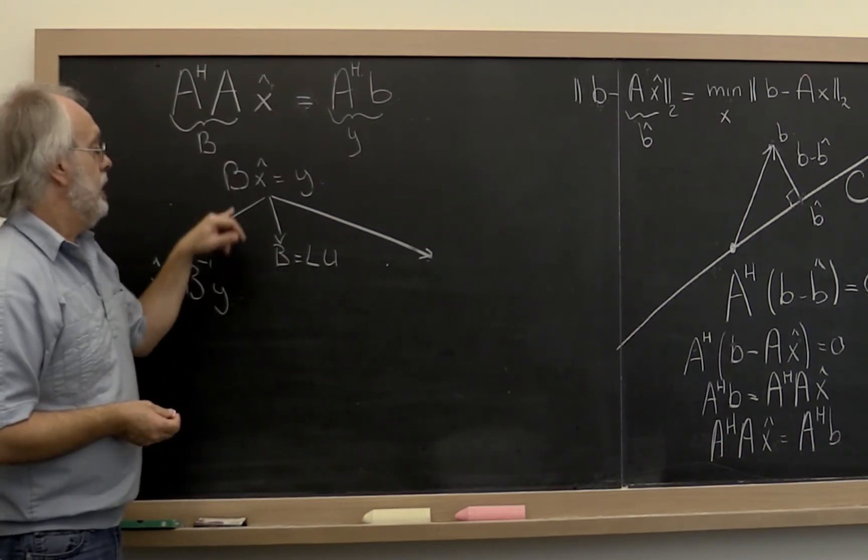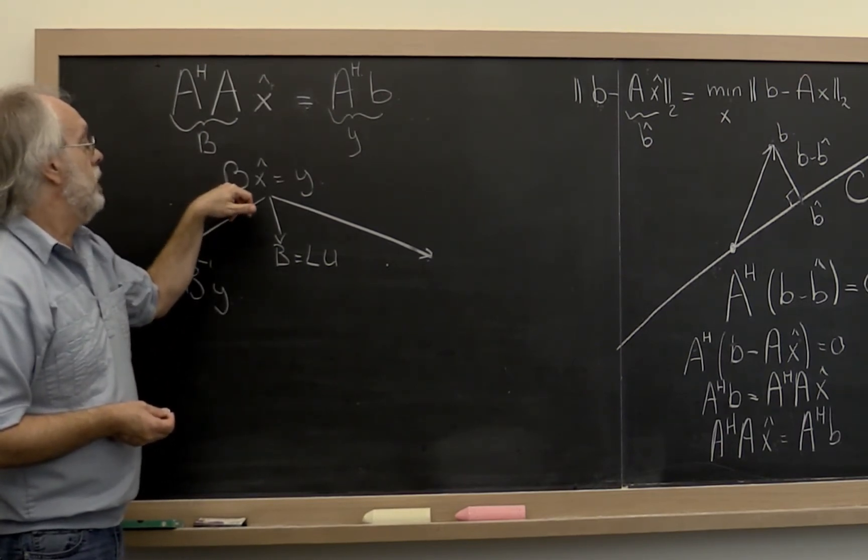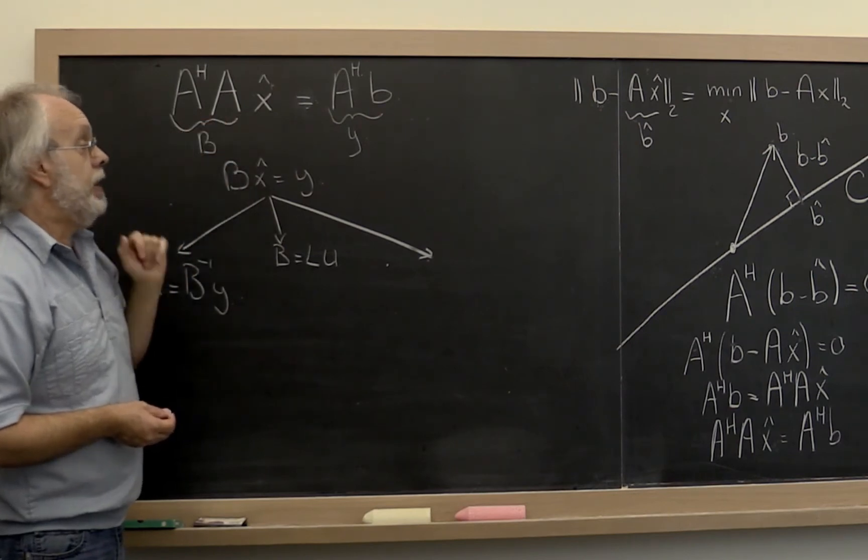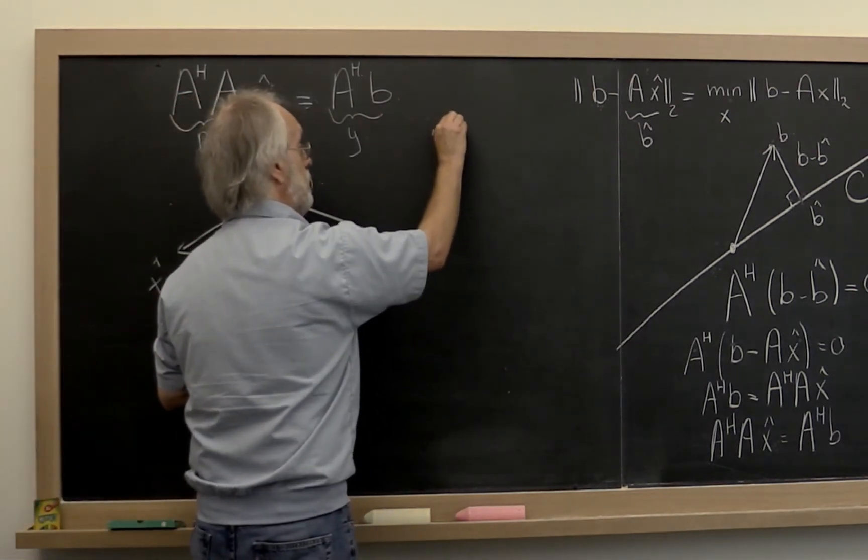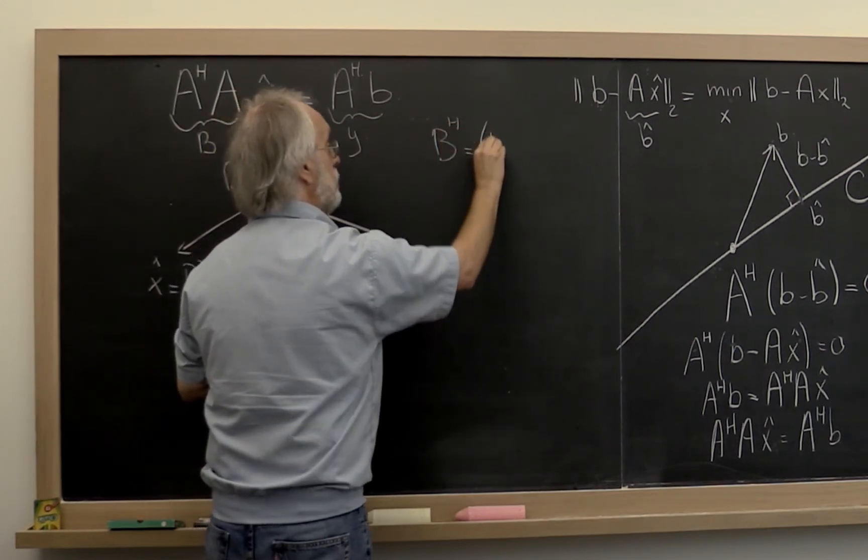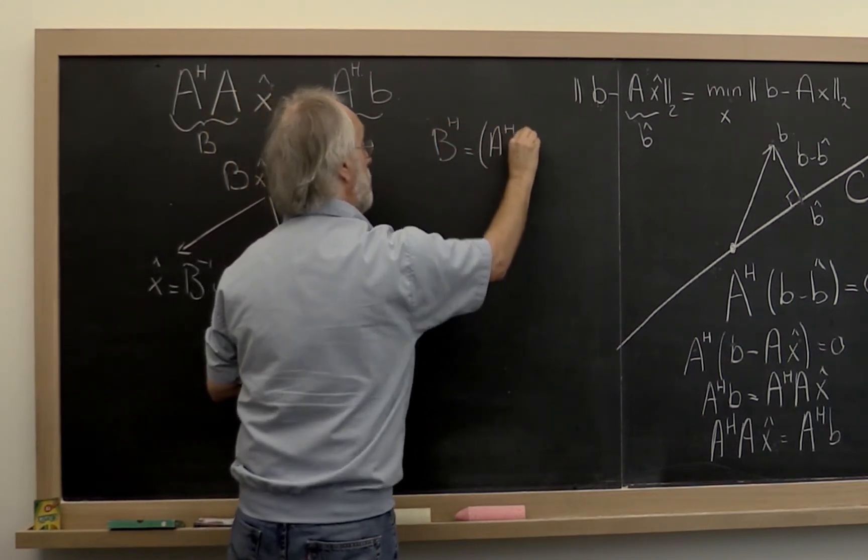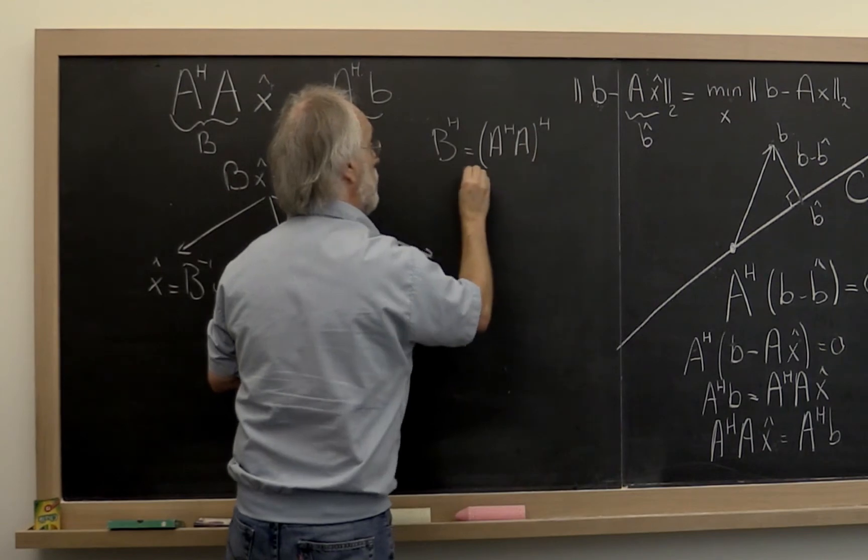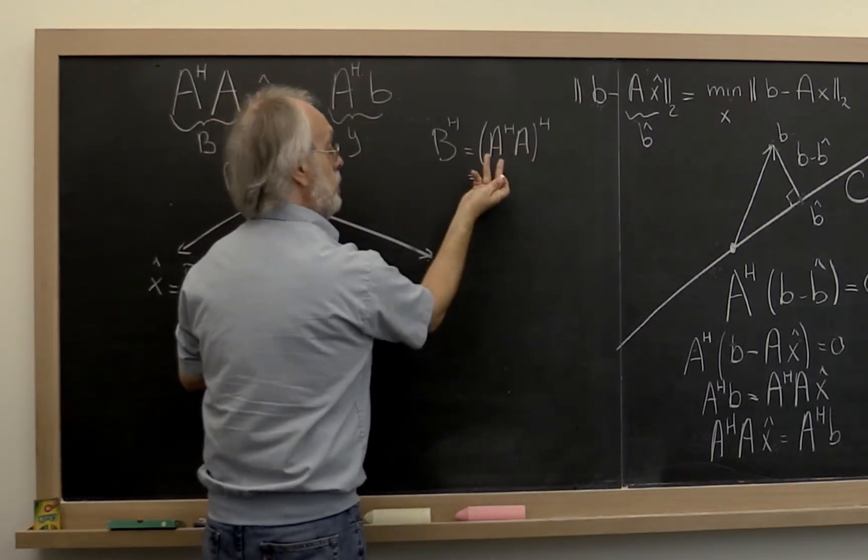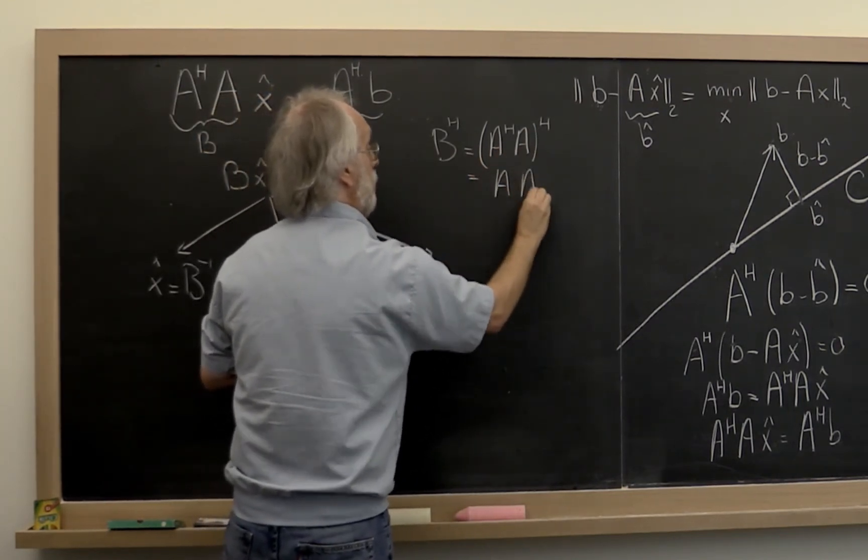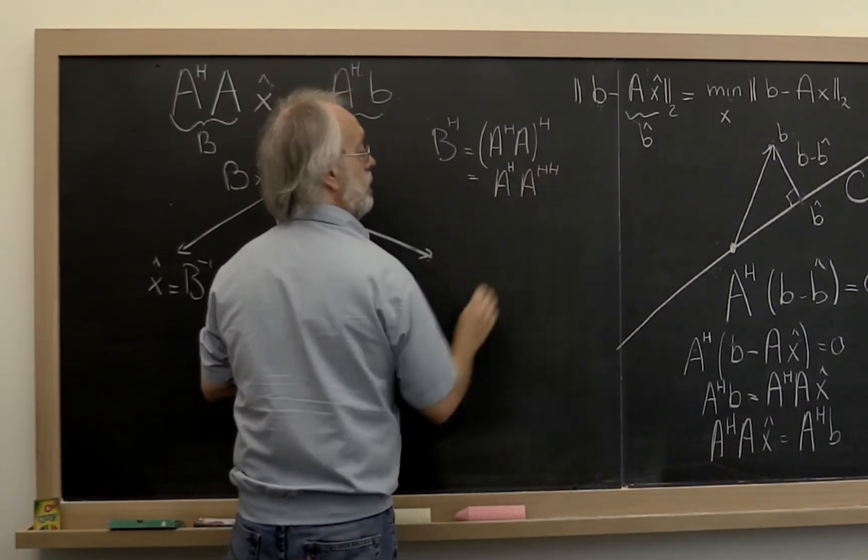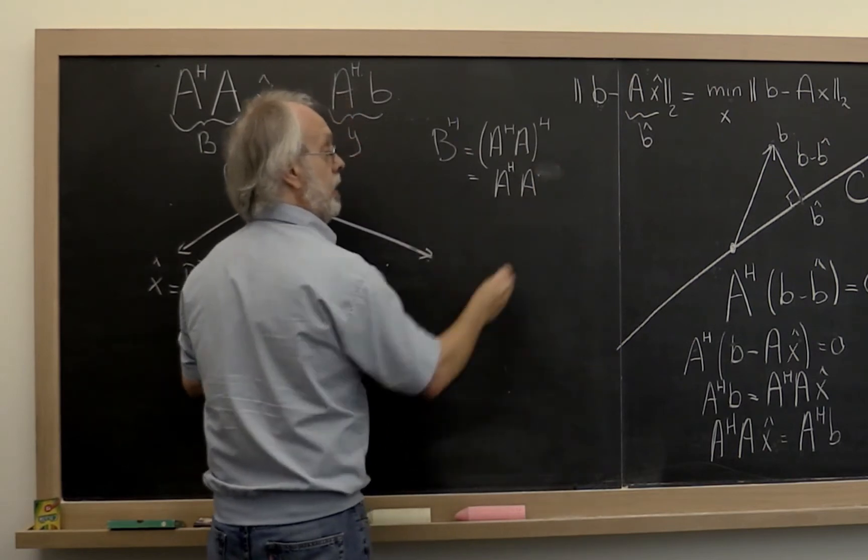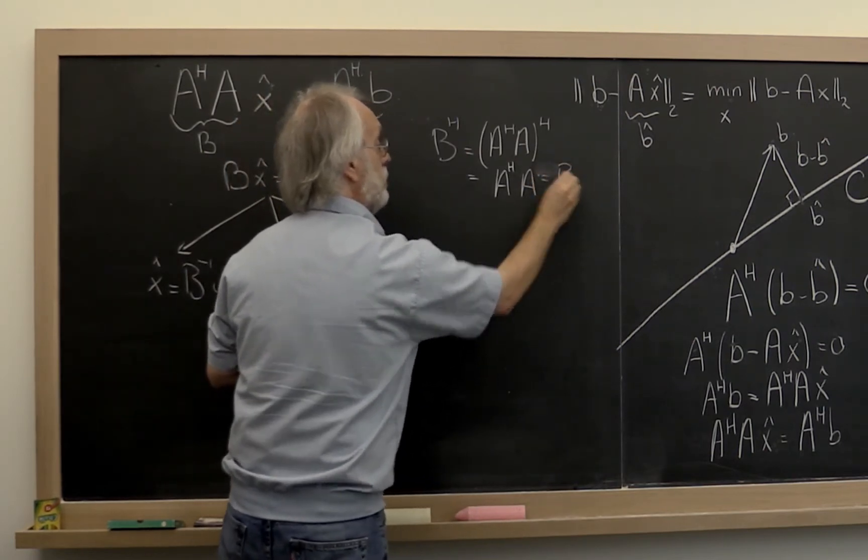And that is to observe that B is not only a square matrix, but it actually is also a Hermitian matrix. If you look at B Hermitian transpose, that is equal to A Hermitian transpose times A Hermitian transpose. And you may remember that what you do is you flip the order of these two and then you take the Hermitian transpose of each. But that, of course, is just A. And you notice that it is actually equal to B.